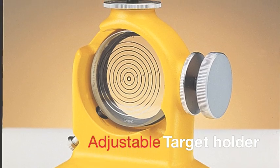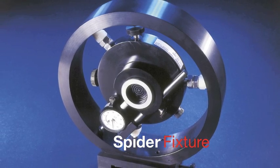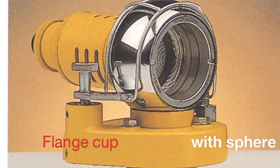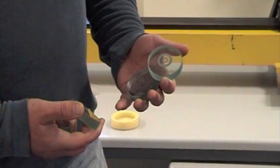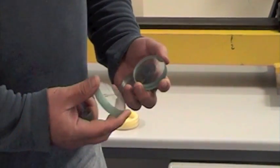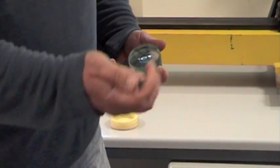For mounting the target we have the adjustable target holder, spider fixture and flange cup with sphere. We normally offer the ball ring style targets but there are different patterns for different jobs. Contact Spectrum for details on the different patterns.